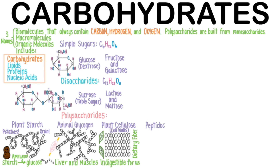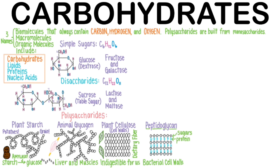Next up, peptidoglycan, which is actually a combination of carbohydrate and proteins. It makes up bacterial cell walls. Protein crosslinks hold together many layers of simple sugars. Students study this fascinating cell wall structure when they take microbiology. Gram-negative bacteria have relatively thin peptidoglycan layers and stain pink, whereas gram-positive bacteria will stain a lovely purple because of their thick peptidoglycan layers.